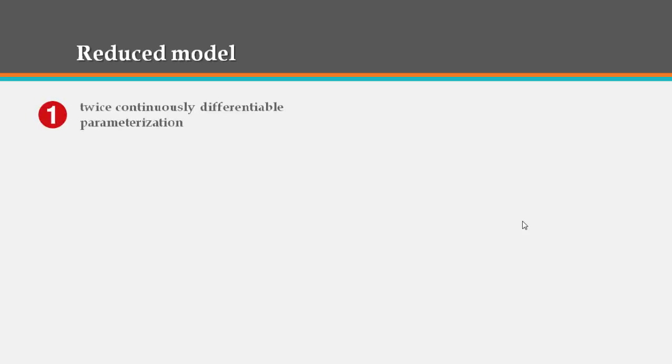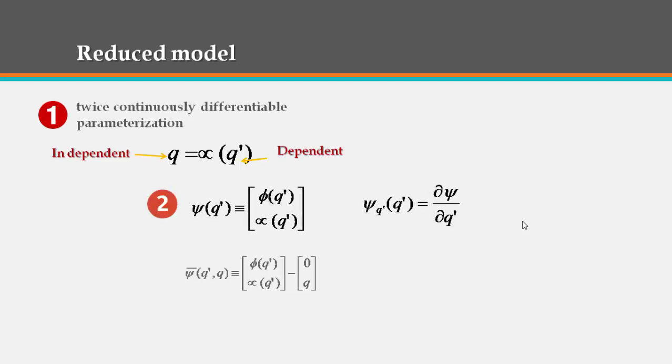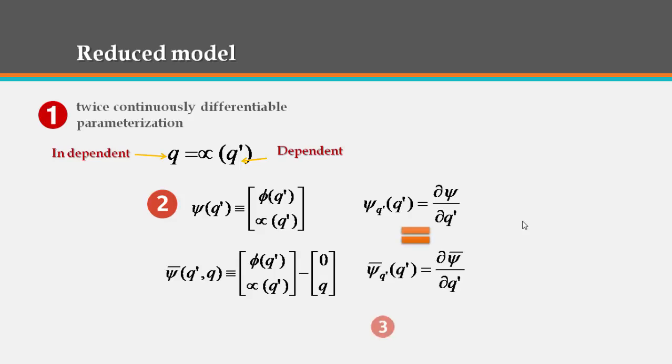So we can choose the independent generalized coordinates q to satisfy the following twice continuously differentiable parameterization. Then the following quantities are defined to obtain the following singularity-free V set. In fact, we choose the region where the constrained system satisfies the constraint and in addition is not in a singular configuration.